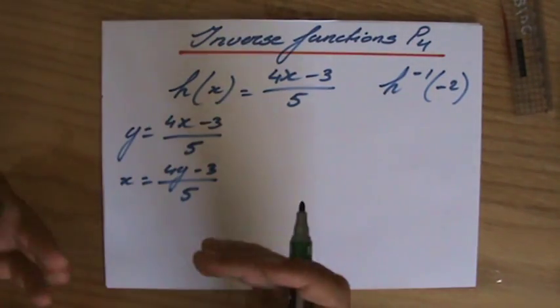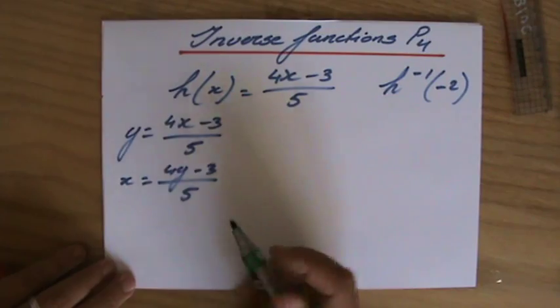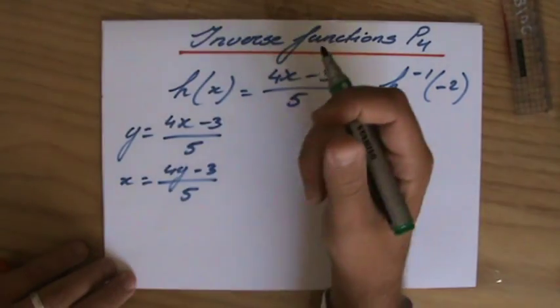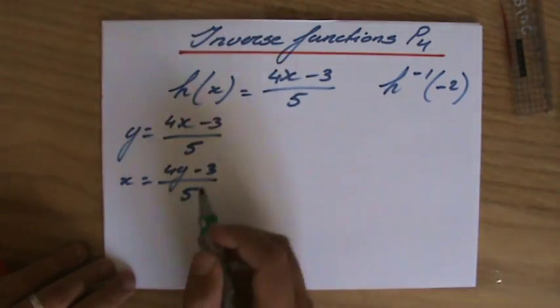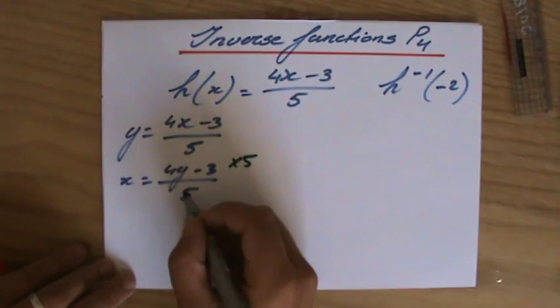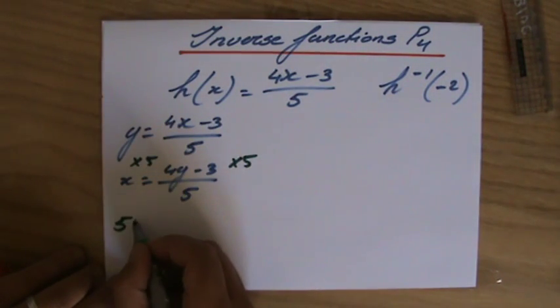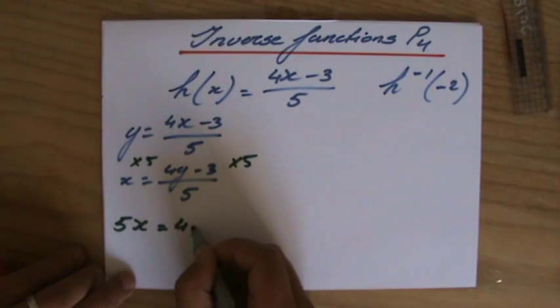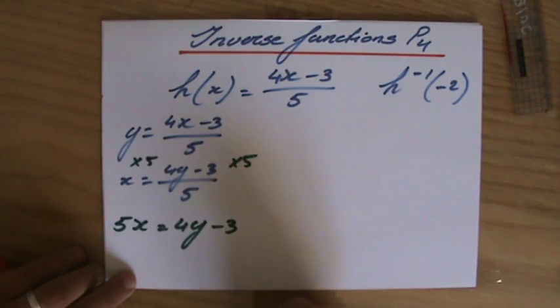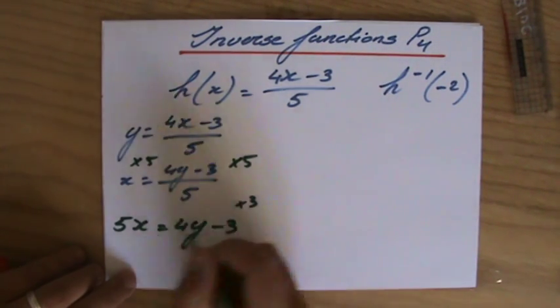To find the inverse, I'm going to make y the subject. You have to be comfortable with manipulating equations. Multiply both sides by 5, so 5x = 4y - 3. Then add 3 to both sides.